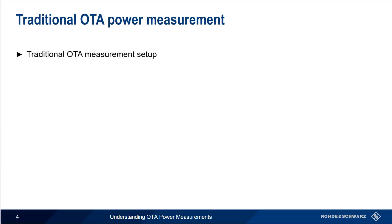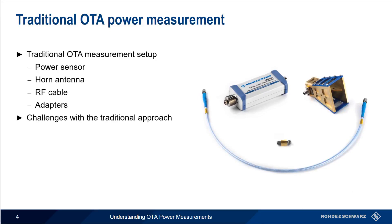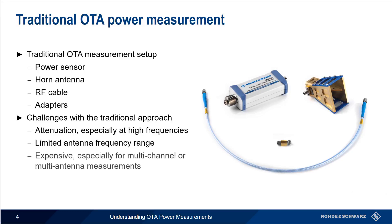A traditional OTA power measurement setup includes a single-channel RF power sensor, a horn antenna for collecting the radiated signal, an RF cable, and any necessary adapters. Although this method has been used for many years, it does present some significant challenges. First, there's the issue of signal attenuation from the horn, cable, and adapters. This attenuation can be substantial, especially for high-frequency applications, and horn antennas have a limited frequency range. This traditional approach also requires a dedicated sensor per antenna, so beamforming or other multi-channel measurements can quickly become very expensive. Finally, a system calibration is required to precisely determine the losses and other frequency-dependent effects.